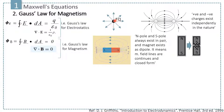Suppose we have a positive charge and electric field lines are diverging away from it. If we consider a Gaussian surface around that charge, then we can find the total flux through that Gaussian surface, and that total flux is the closed integral of E dot dA, equal to q over epsilon-0.